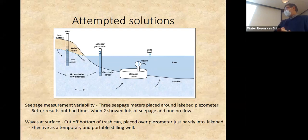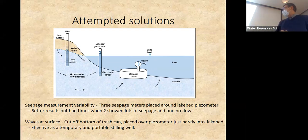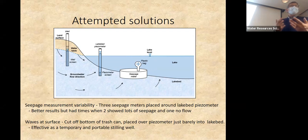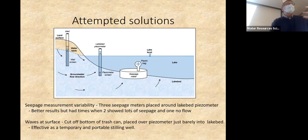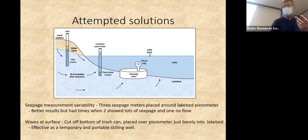Some issues: seepage flux measurements are highly variable, and lake bed piezometers can be hard to read. Sometimes you might get bypass flow and see zero head change implying no discharge. We tried putting three seepage meters close together to do statistics — we got better results, but sometimes two showed a lot of seepage and one showed none. With lake waves, we cut off the bottom of a trash can and placed it over the piezometer like a steering wheel, but the bypass issue remained.